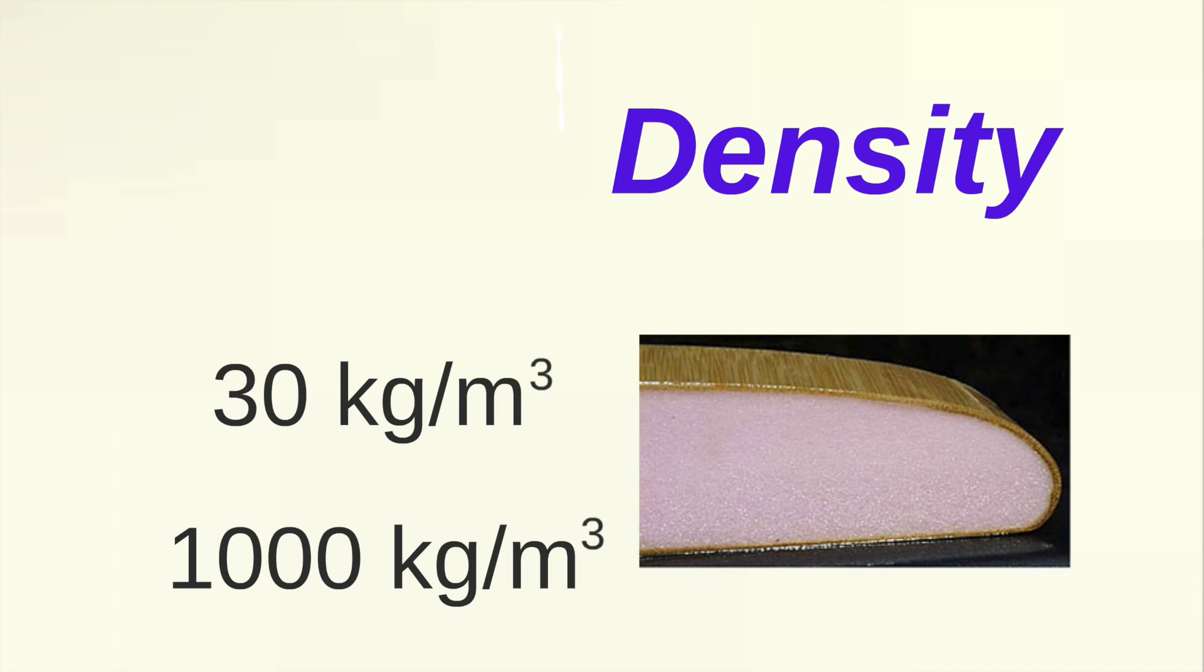Now the density of water is 1,000 kilograms per meter cubed. So clearly the surfboard is much less dense than the water, and will float. And you'll notice that the units of density are a mass unit divided by a volume unit.